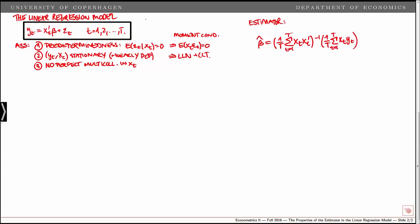In this video, we make a simplifying assumption that x only contains one variable, so we set k to 1. We moreover assume that the expected value of xt is 0, so that the unconditional mean of x is 0. Now, to study the properties of beta hat, we can rewrite the estimator by plugging in for yt, which gives the following.